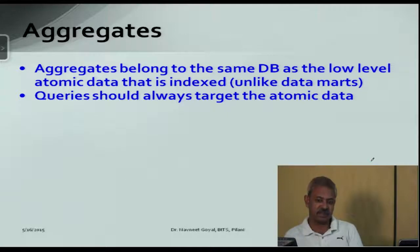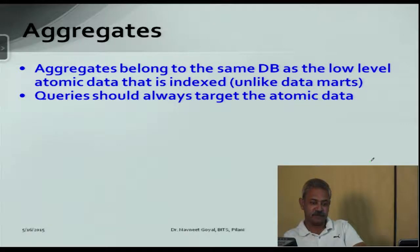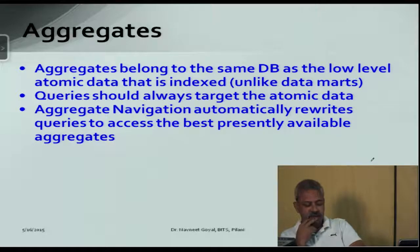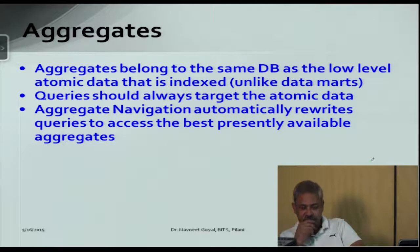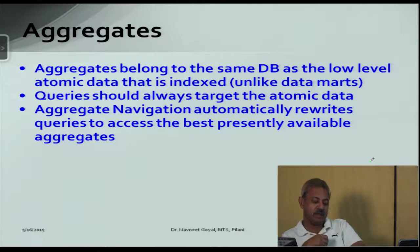The natural question is: if we don't use aggregates explicitly in queries, how does the query exploit them? The answer is a middleware called an aggregate navigator, which automatically rewrites queries to access the best possible available aggregates. How it intercepts queries and makes them aggregate-aware — all these things will be discussed in today's lecture.